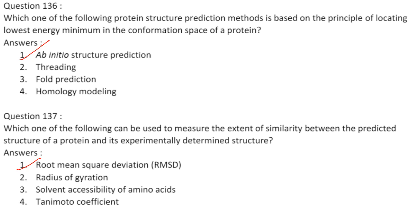The protein structure prediction method based on the principle of locating the lowest energy minimum in the conformation space of a protein is ab initio structure prediction. Answer is option 1.